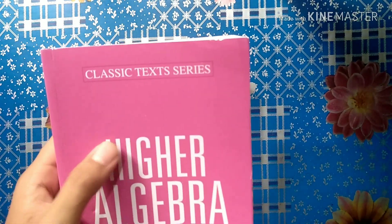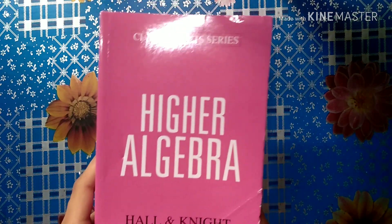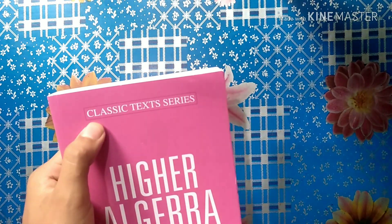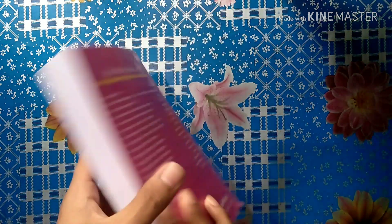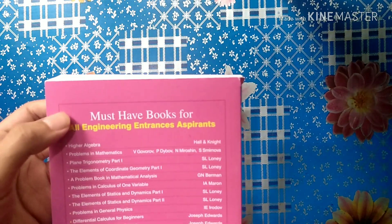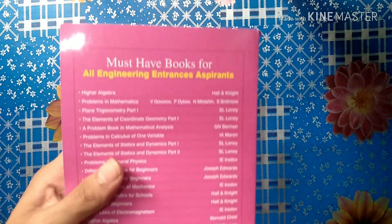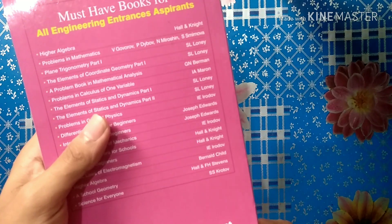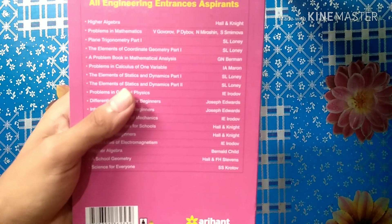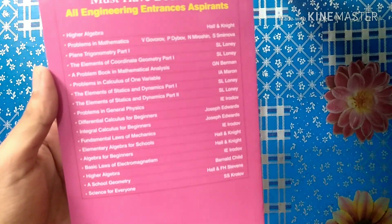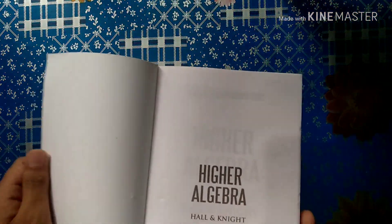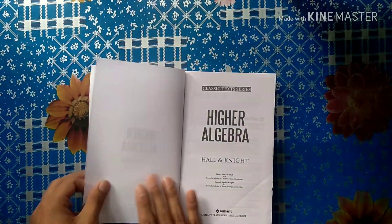This book is a high algebraic writer, Hall and Knight. It is an Arihant publication. You can use it in the Classic Text Series. The price is 195 rupees. On Amazon it's 110 rupees. Let's see, here I will show you how the contents are.